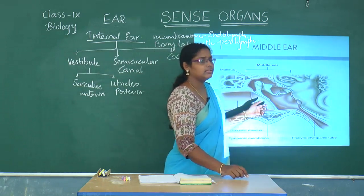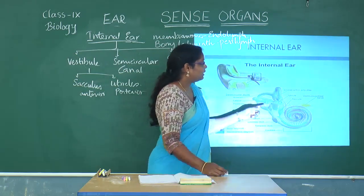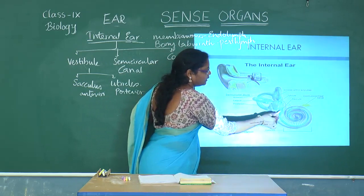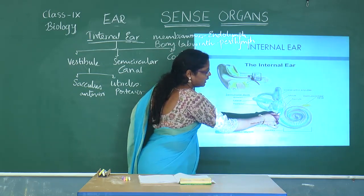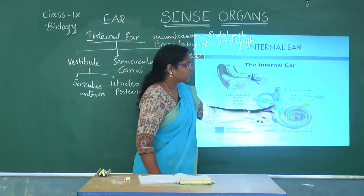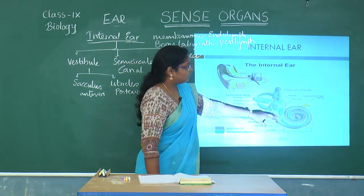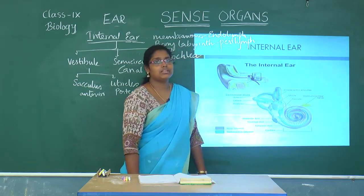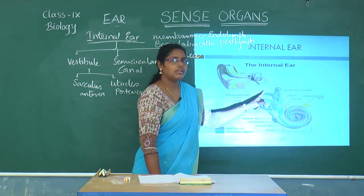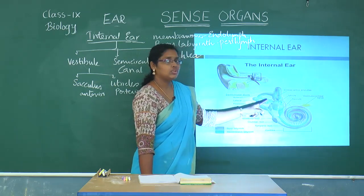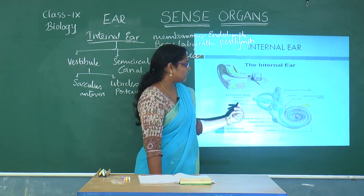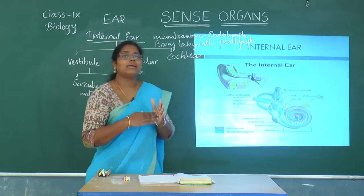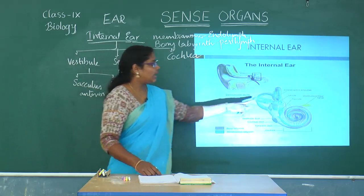In this slide, we can see the vestibule, with the anterior part called the sacculus and the posterior part called the utricle. From the vestibule, there are three ring-like semicircular structures forming the semicircular canals: the anterior semicircular canal, lateral semicircular canal, and posterior semicircular canal, which are at right angles to each other.